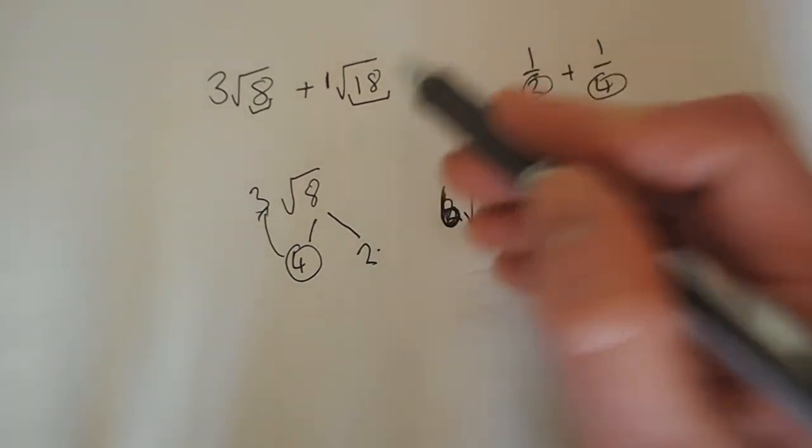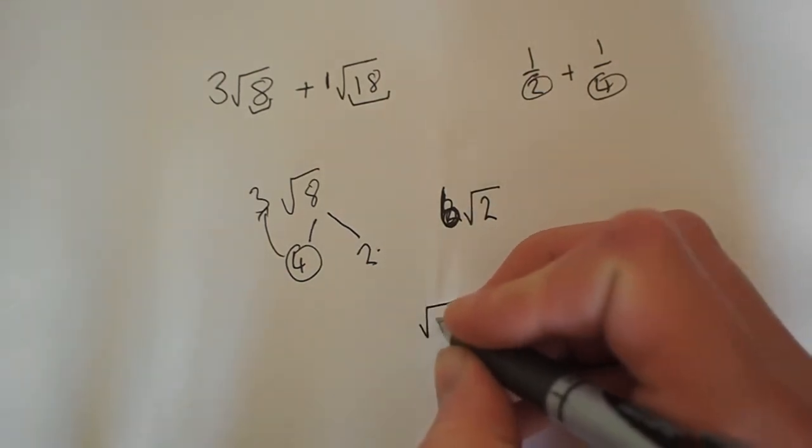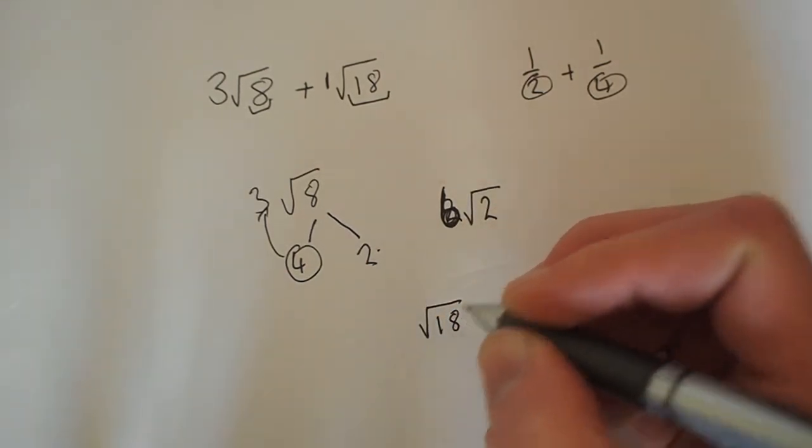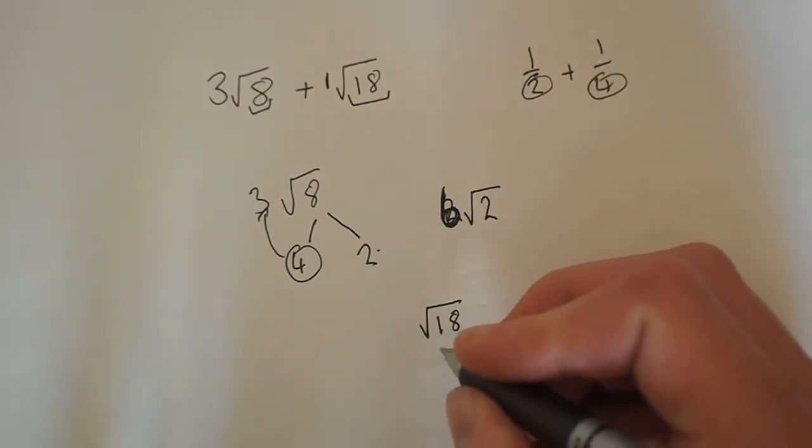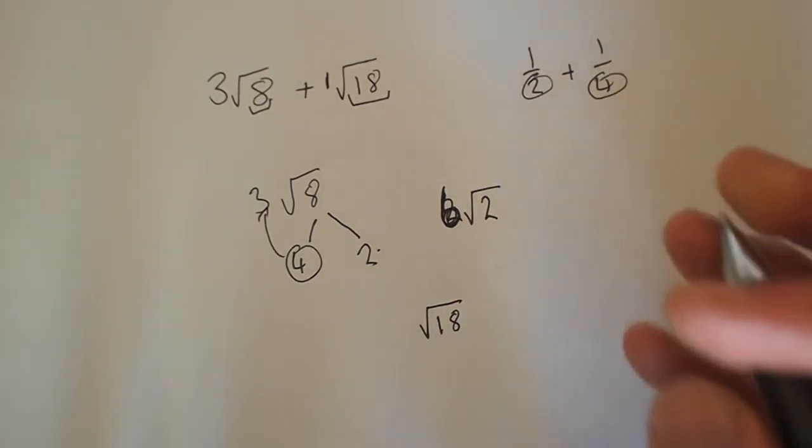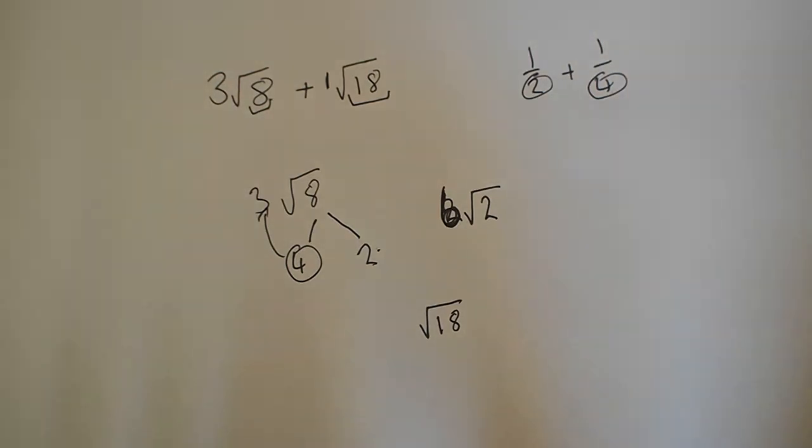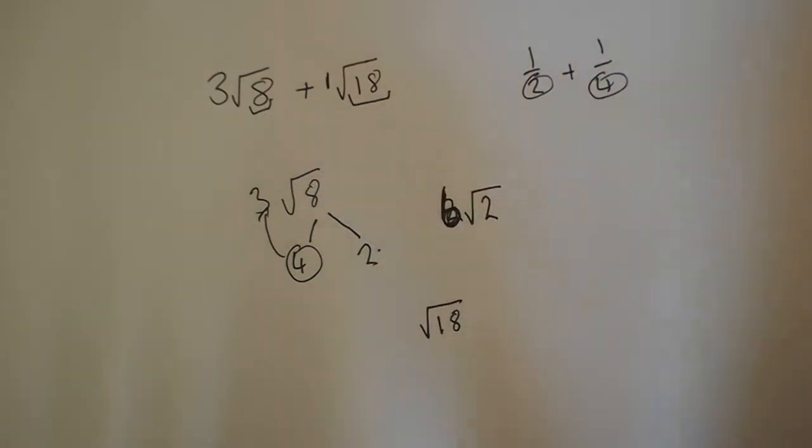And now we've got 18. And you can see it's not always going to work adding surds. However, when using this method, you're going to have to find, you can only really add surds which share a common factor. And the common factor here is the 2.